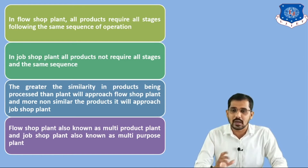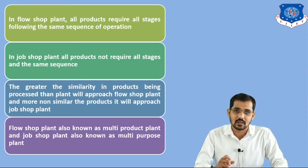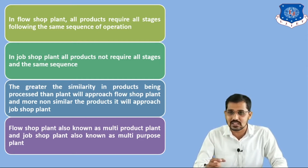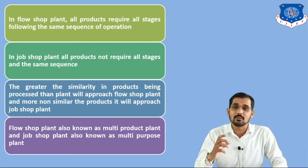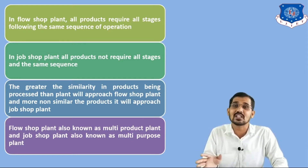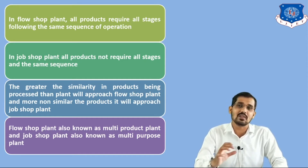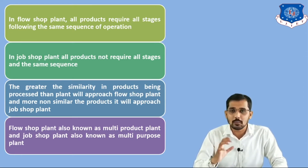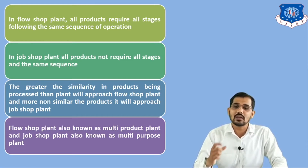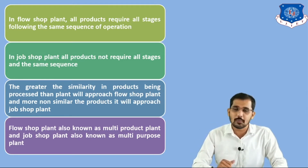The flow shop plant is also known as the multi-product plant, and the job shop plant is also known as the multi-purpose plant. Multi-purpose means we require different numbers of stages and different sequences. Multi-product means we require the same number of stages and the same sequences for all similar products. That is why the flow shop plant is known as the multi-product plant and the job shop plant is known as the multi-purpose plant.